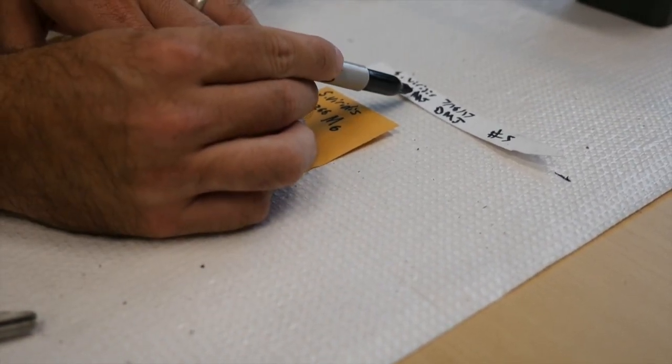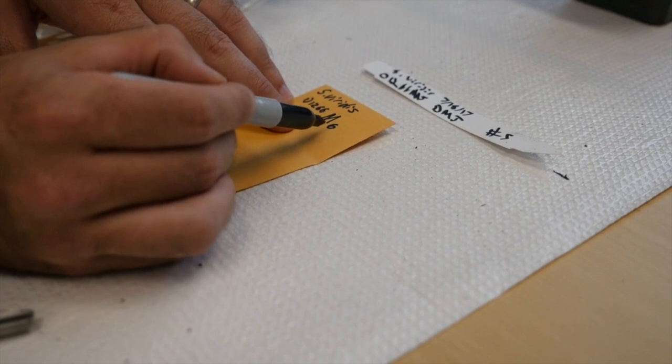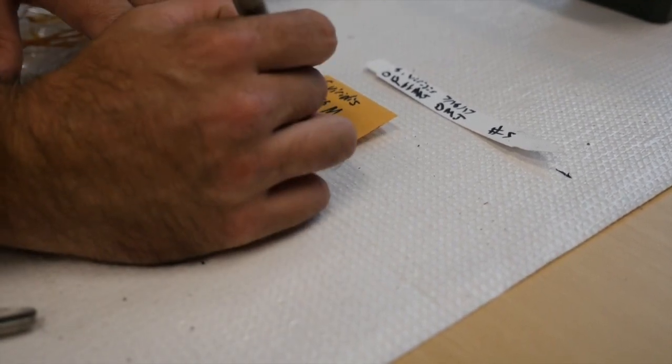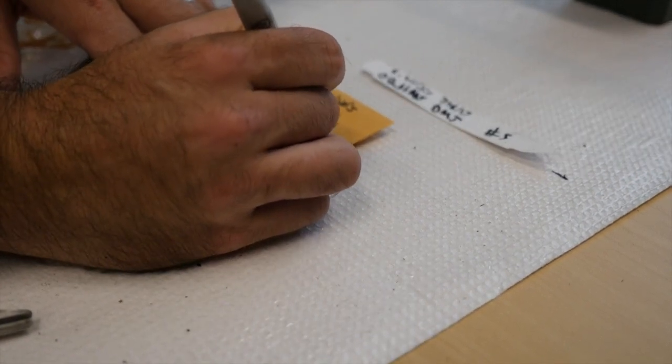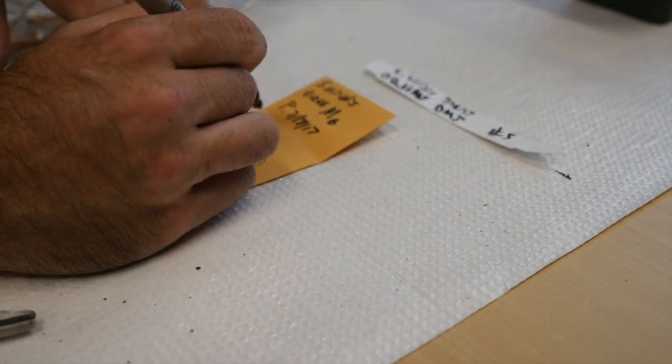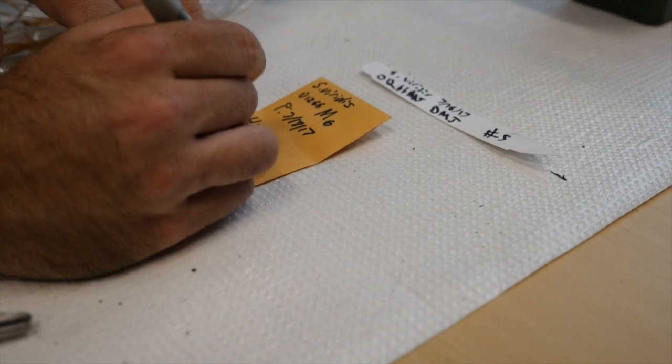And then plant date will be on the tag, and then today's date, the date in which it was harvested.